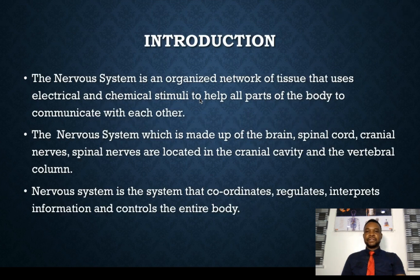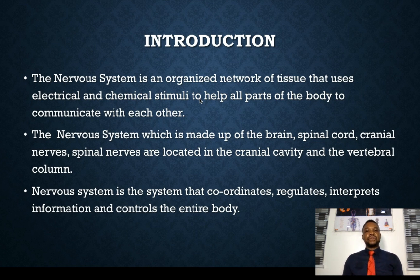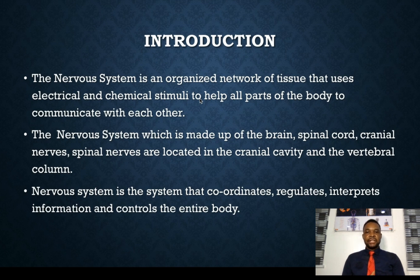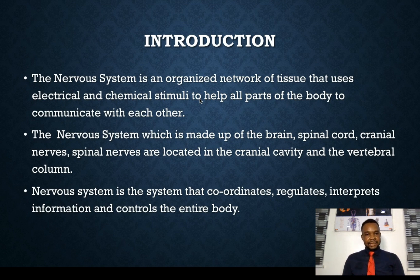Now what is the nervous system? The nervous system is an organized network of tissue that uses electrical and chemical stimuli to help all parts of the body to communicate with each other. There is need for total communication between the entire body to ensure that we work effectively. So the nervous system controls, regulates and coordinates the general activities of the body, ensuring that we live perfectly in our environment and adapt to the environment. So it regulates both the internal and the external environment.